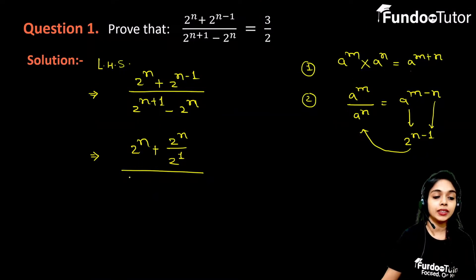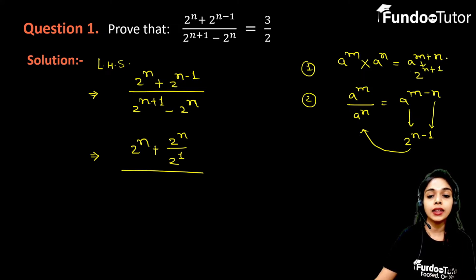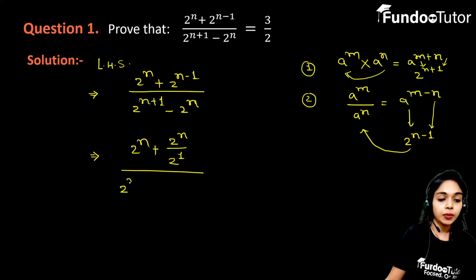Similarly, we will apply product law in the denominator. When we compare this 2 to the power n plus 1 to a to the power m plus n, m's value is n and n's value is 1. So we can write this as 2 to the power n into 2 to the power 1 minus 2 to the power n.